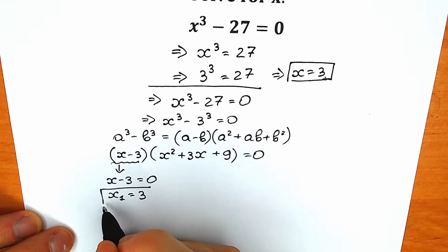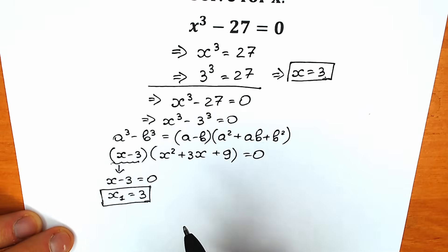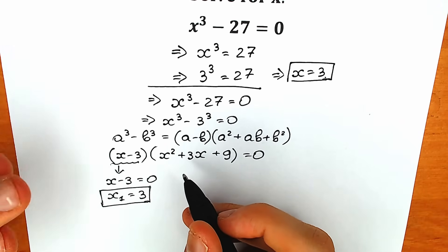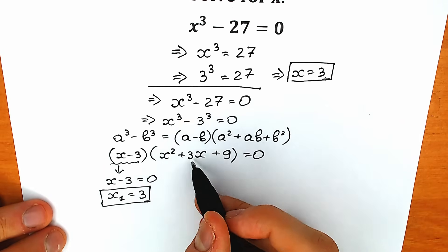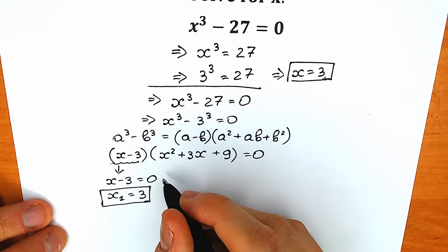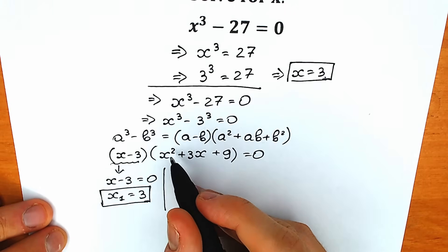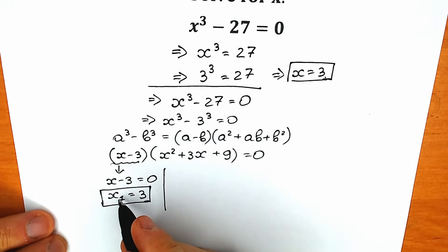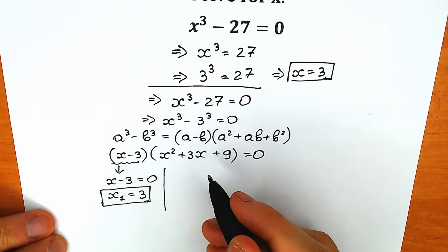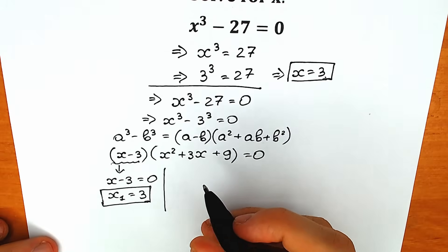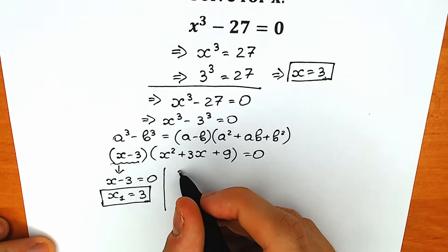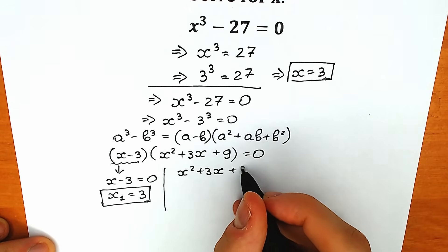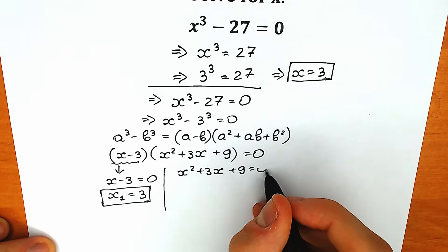But if you look closer, we have the second parenthesis. Because we have x², it means we will have two more roots from here. Overall, we'll have three roots — one from the first factor and two from the second. So let's now solve this quadratic equation: x² plus 3x plus 9 equal to 0.